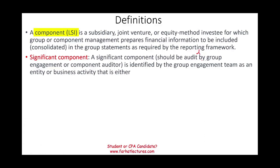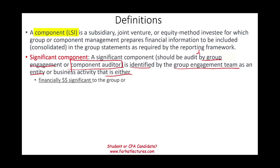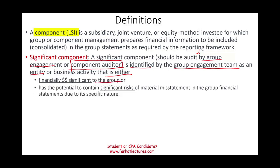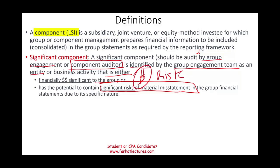Now we're going to learn about what's a significant component. A significant component should be audited by the group engagement team or the component auditor. The significant component is identified by the group engagement team as an entity or business that is either financially significant to the group — meaning it has plenty of assets or revenue — or it has the potential to contain significant risk of material misstatement. So either it represents a large dollar amount relative to the total company in assets or revenue, or the risk it involves is significant to the group financial statement. Either of these will qualify the component as a significant component.